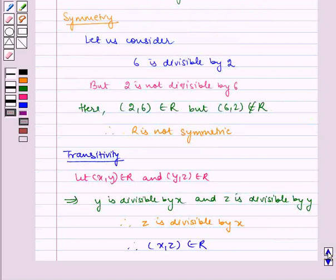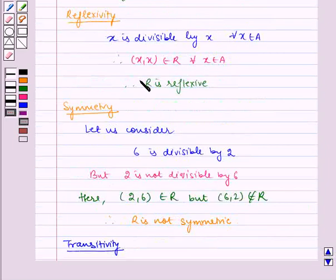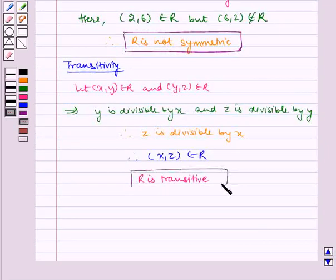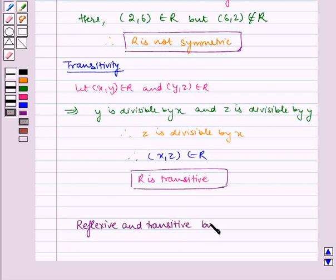Therefore we can see that R is reflexive, R is not symmetric, and R is transitive. The final answer is reflexive and transitive but not symmetric.